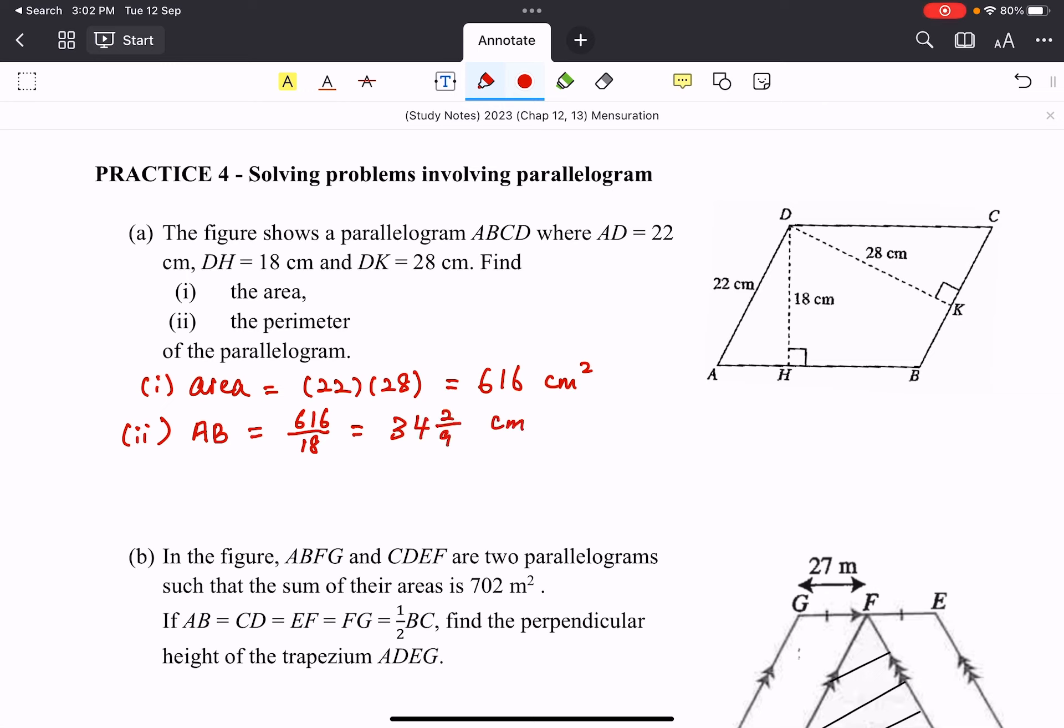So once we have AB, we also know that this is going to be equal to CD. Then perimeter will be equal to, well, just need to add them up. So we have 22 plus 22 plus 34 and 2/9 cm plus 34 and 2/9. This will add up to 112 and 4/9 cm. There we go. So the area doesn't change, but of course, we can choose a different pair of base and height. So this is something that you need to be aware of.